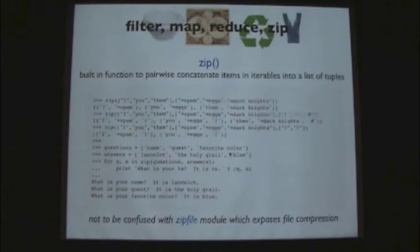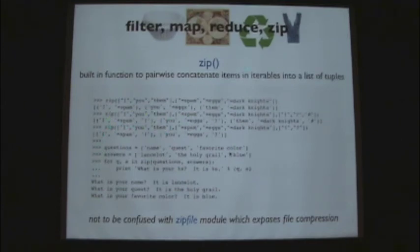Question: could you use zip to create dictionaries pretty quickly if you have two things to assign, like a key and a value? Yes — you can run the zip thing and then say dict() around that, and then you've got a dictionary.